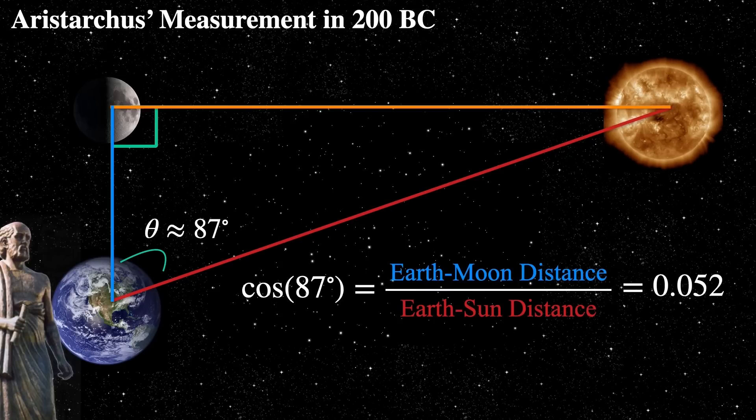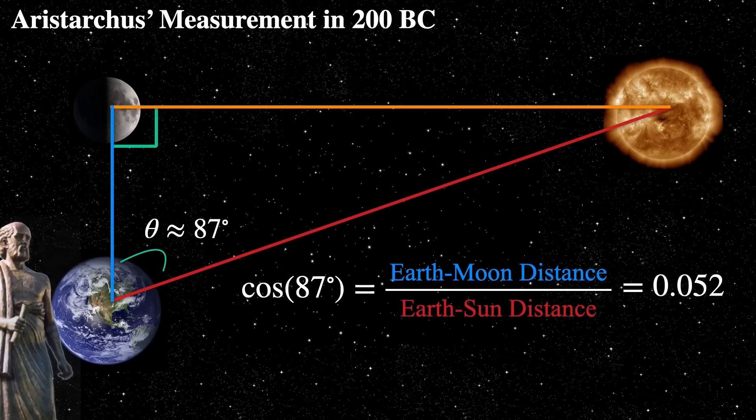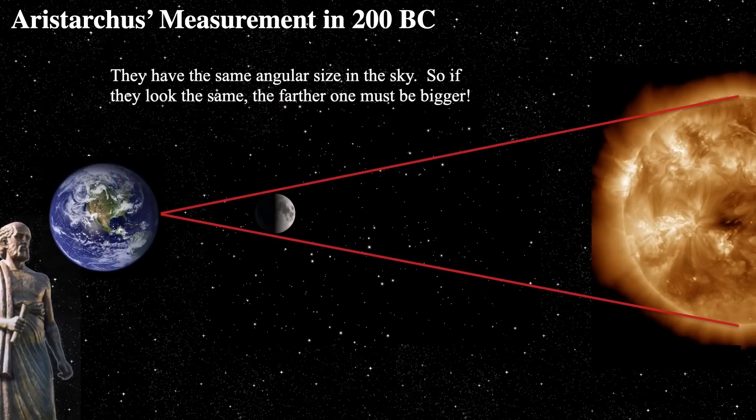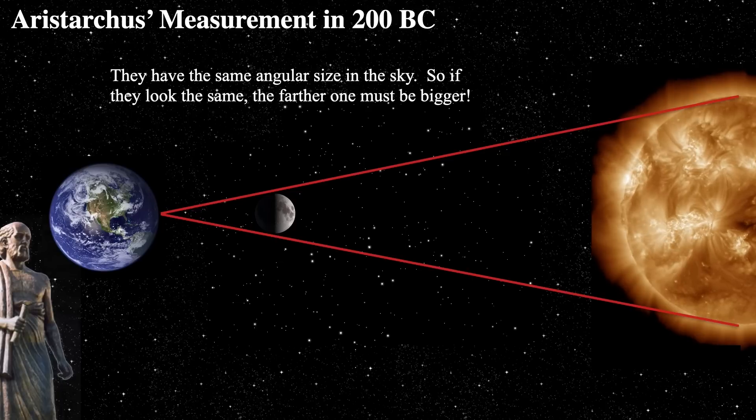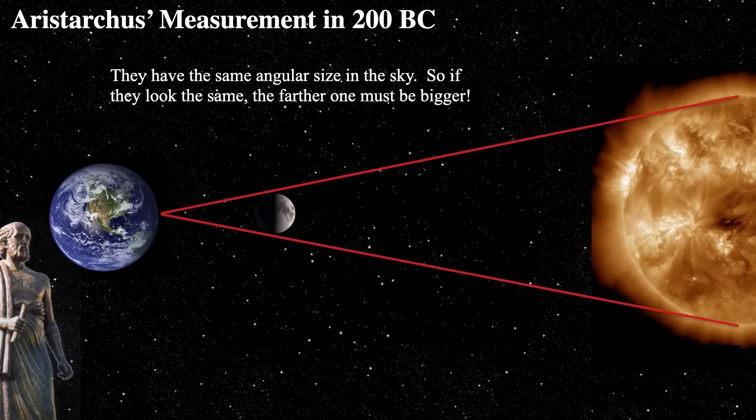Aristarchus found out something very important. He found out that the sun is much, much, much further than the moon. Now, he could also turn this around and say, wait a second. If we look in the sky and we look at the moon and the sun, well, they look to be the same size in the sky. So therefore,